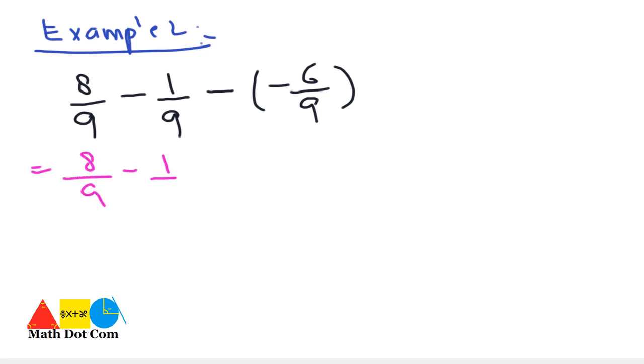You will write 8 over 9 minus 1 over 9 minus and minus plus. When you multiply the 2 minus you will get the plus. So plus 6 over 9, brackets are removed. Now the same method will be followed. Take the LCM of the denominator. LCM of the denominator will be 9.